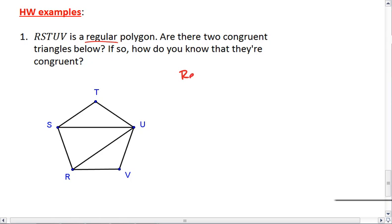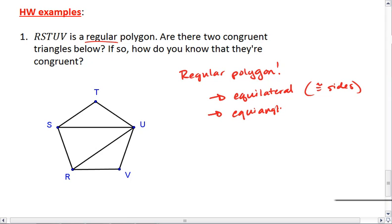Okay, that we have a regular polygon means we have equilateral, so congruent sides, and equiangular, which is congruent angles. So I can mark all five sides congruent and all five large angles of the polygon congruent.